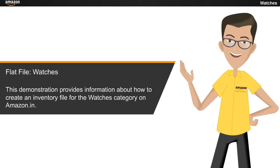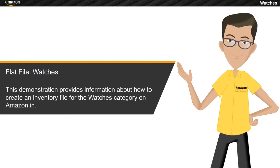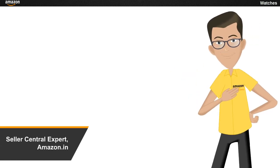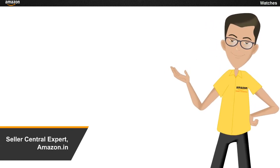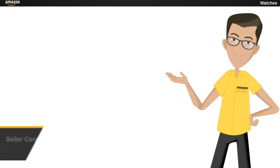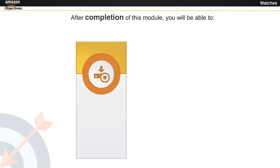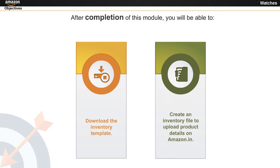This demonstration provides information about how to create an inventory file for the Watches category on Amazon.in. I am a Seller Central expert and I am here to help you with your queries. After completion of this module, you will be able to download the inventory template and create an inventory file to upload product details on Amazon.in.